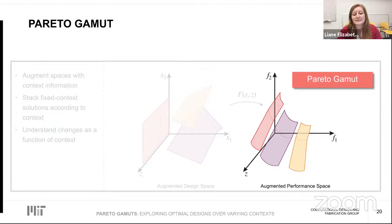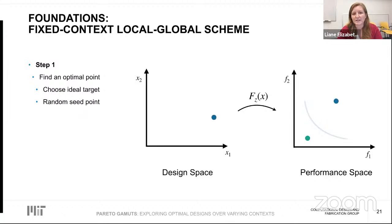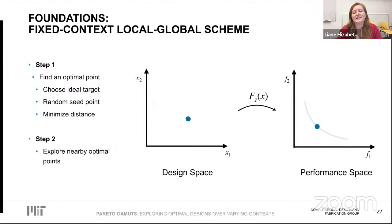We do this by generalizing an existing approach for fixed-context optimization called a local-global scheme, first in the standard design space and then lifted to our Pareto gamut space. In the first step, we find a point on the Pareto front by selecting a target point with some ideal but generally impossible trade-off, then pair it with a randomly chosen seed point and push it toward the Pareto front by minimizing the distance to the target. To uncover more of the front, we note that the Pareto front and set are locally manifolds, so every optimal point is surrounded by a neighborhood of other optimal points.